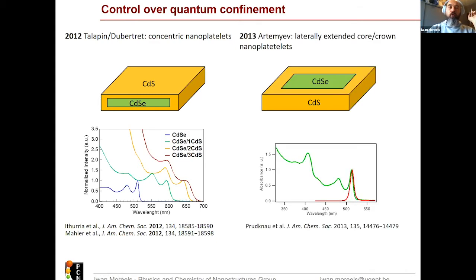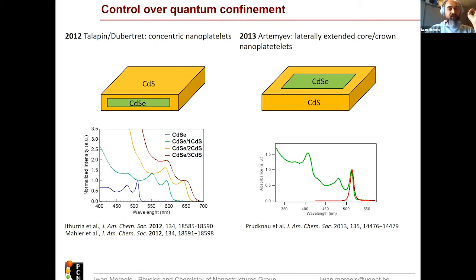One year after, the group of Artenev demonstrated that you can also exclusively grow a second material around the edges of the nanoplatelet. In this case, you don't grow it in the direction of strong quantum confinement, but only around the edges where weak confinement applies. In contrast with the redshift observed before, in this case you don't have any redshift and you maintain a very fast fluorescence lifetime. As of these years, you can for the first time start to control the quantum confinement properties by growing anisotropic structures either concentrically or only laterally.